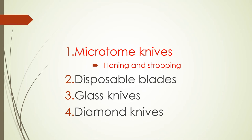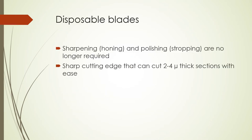Next we have disposable blades, where sharpening and polishing are no longer required — a major relief for medical technologists, since honing and stropping takes a lot of time and effort. Disposable blades can provide 2 to 4 micron thick sections with ease. All we have to do is put the blade onto the knife carrier, and when it's dull, just remove it, throw it out, and replace with a new blade.